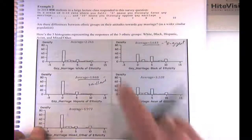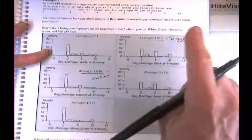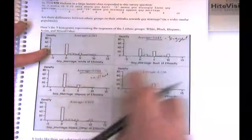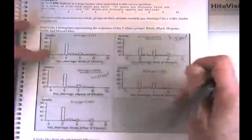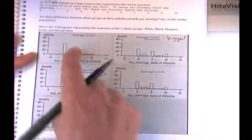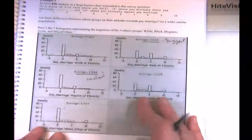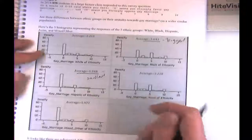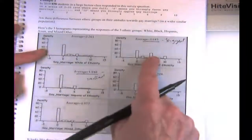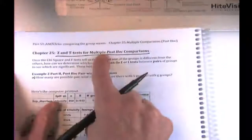With five groups, there are five choices for the first group, and four comparisons for each, giving 5 × 4 = 20 ordered comparisons. But since white versus black is the same comparison as black versus white, we divide by two, giving 10 unordered pairwise comparisons. That's what we mean by multiple comparisons — having more than two groups means multiple comparisons.